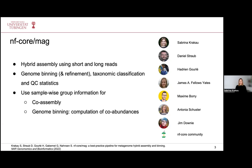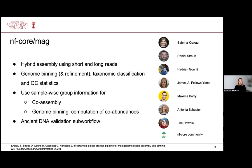Additionally, the group information is also used for computation of co-abundances, which is used in the genome binning step. Furthermore, the pipeline allows handling of ancient DNA because it contains an ancient DNA validation sub-workflow, which is rather specific to this pipeline. A previous version of this pipeline was already published at the beginning of this year in NAR Genomics and Bioinformatics, so if interested, you can have a look at that application note.